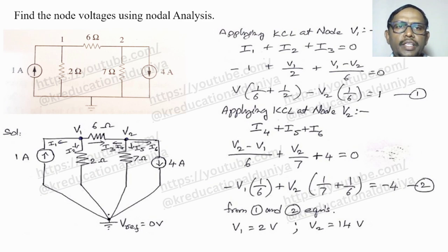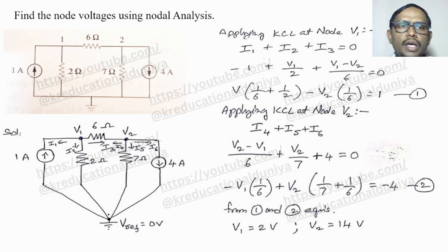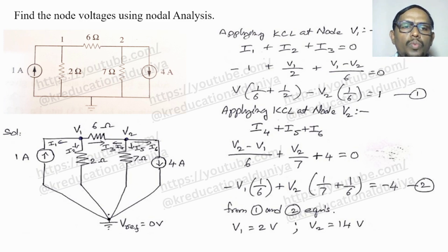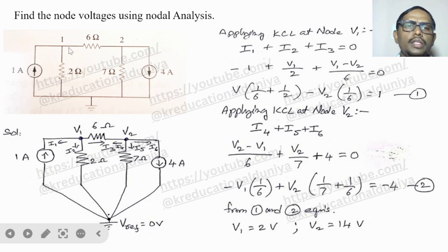The first problem is to find the node voltages using nodal analysis. In nodal analysis, the first step is finding out the number of nodes. If I redraw this diagram, there are two current sources given. A node is where three or more branches meet together. If you observe carefully, there are three nodes present in total.